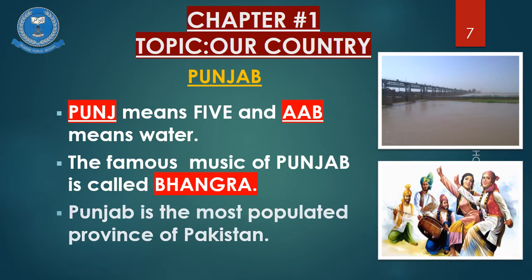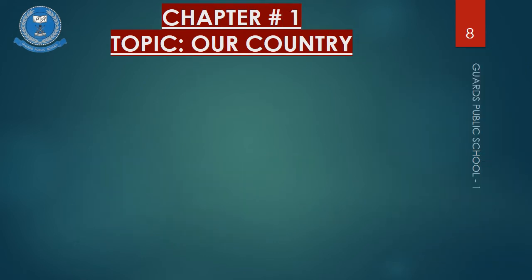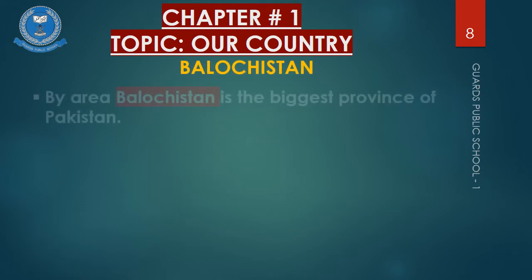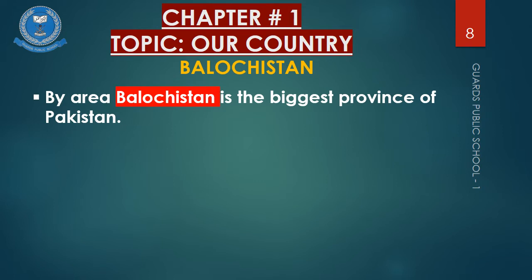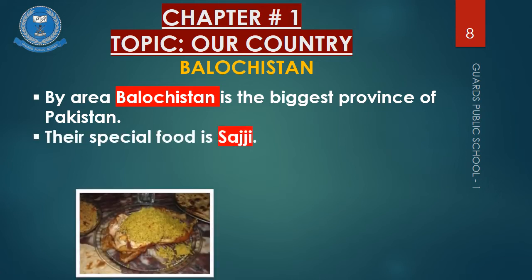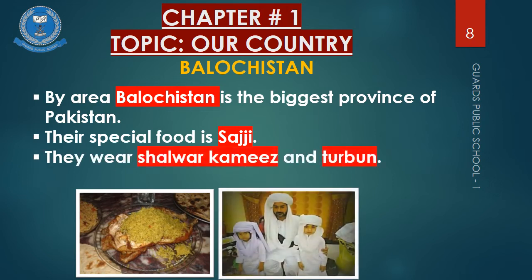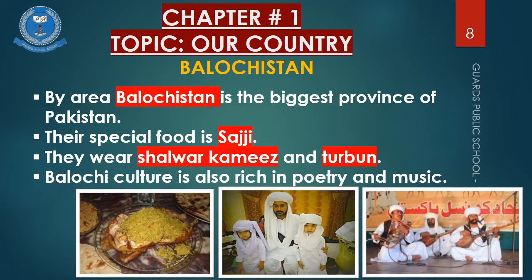Punjab is the most populated province of Pakistan. Our third province is Balochistan. By area, Balochistan is the biggest province of Pakistan. The people of Balochistan are called Balochis. Their special food item is Saji. They wear shalwar kameez and turban. Women like to wear frocks and shalwar, and most women do embroidery on clothes. Balochi culture is also rich in poetry and music.